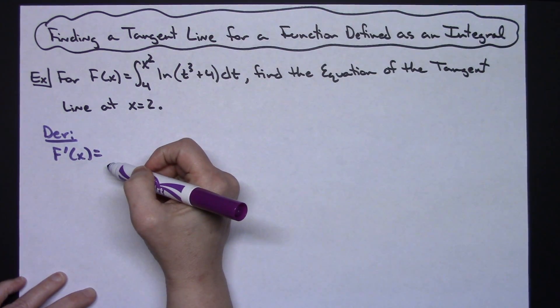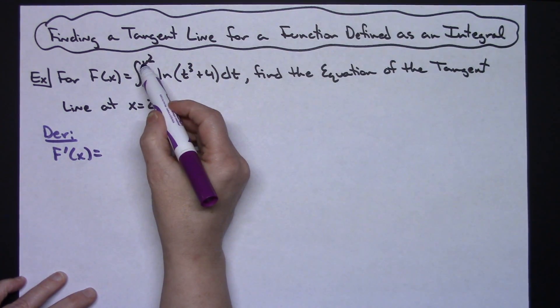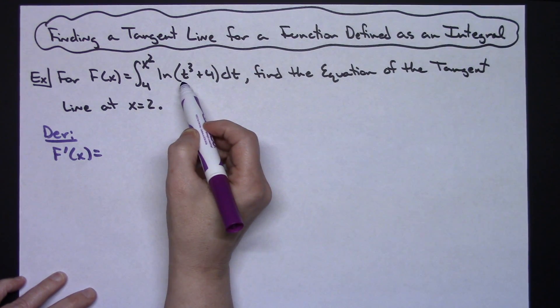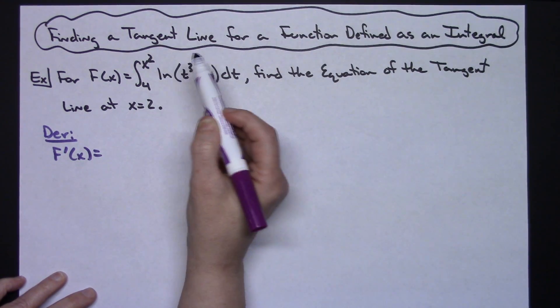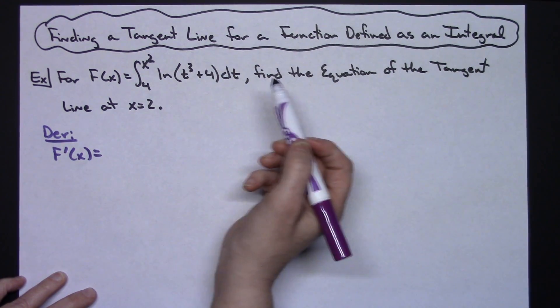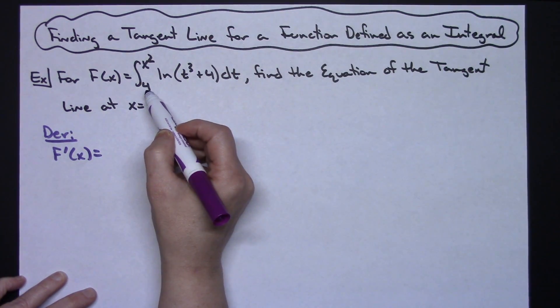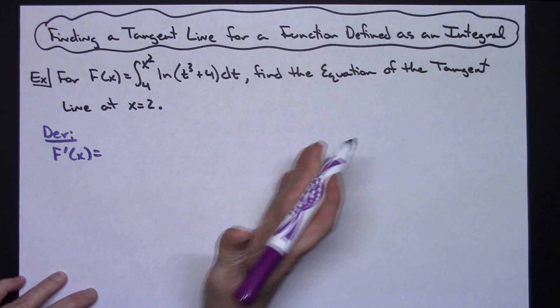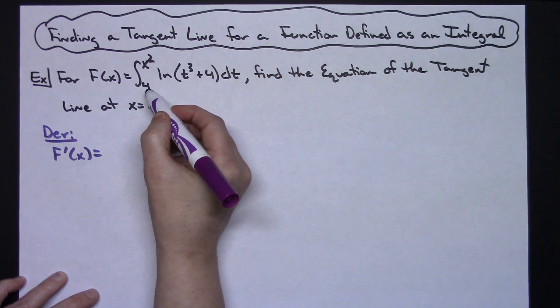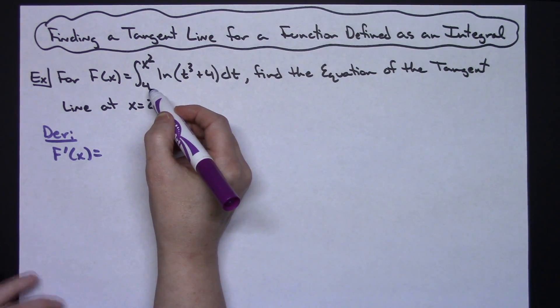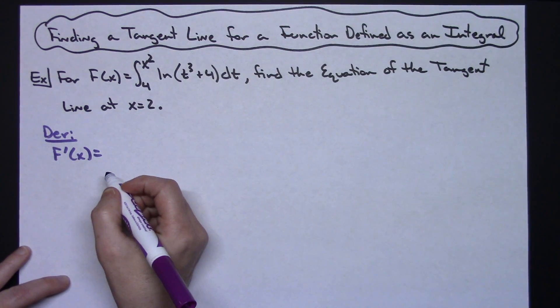As you recall, second fundamental theorem of calculus: we're going to take this x squared, plug it into our function, and then multiply it by the derivative, and then minus plugging 4 into the function and then taking the derivative of that as well. But notice that the bottom is a constant, so that whole second term is just going to fall out because the derivative of a constant is 0.